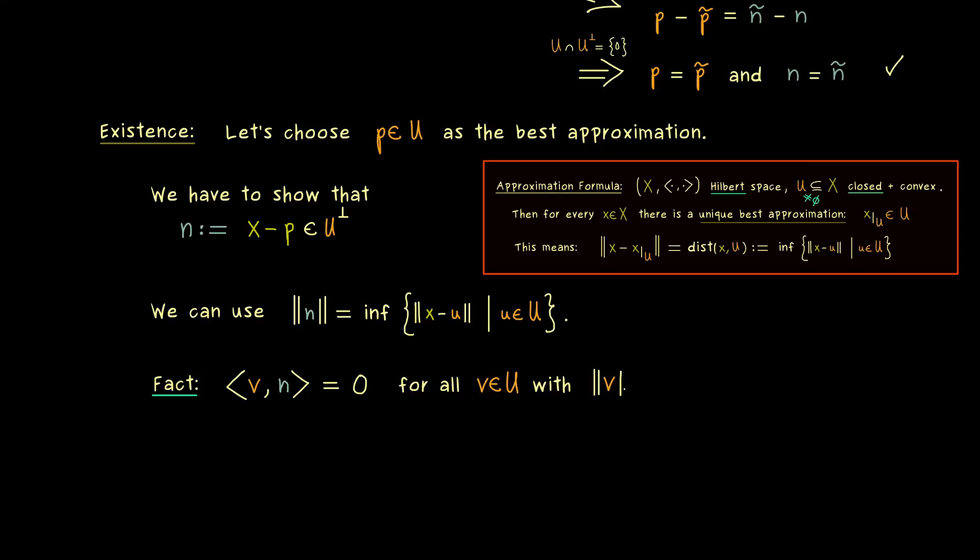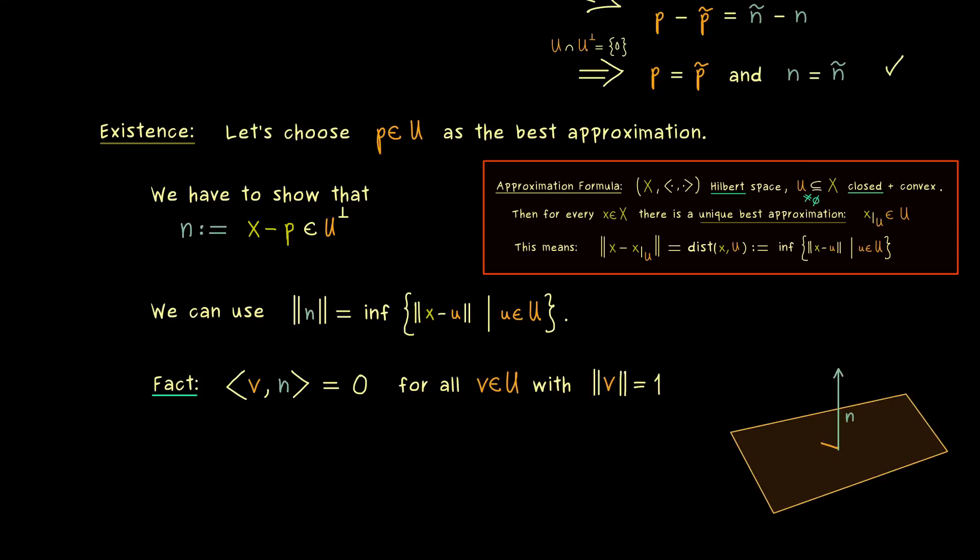So for example, if we say that we have the vector v in the inner product with n and we assume that v has the length 1 and this inner product is also 0. Moreover, we want to have that for all v in the subspace U. So we could say, we test the orthogonality for all directions in U. And then obviously, just by scaling the vectors v, we have it for all vectors in the subspace U. So clearly, this statement there is equivalent for n being in the orthogonal complement of U.